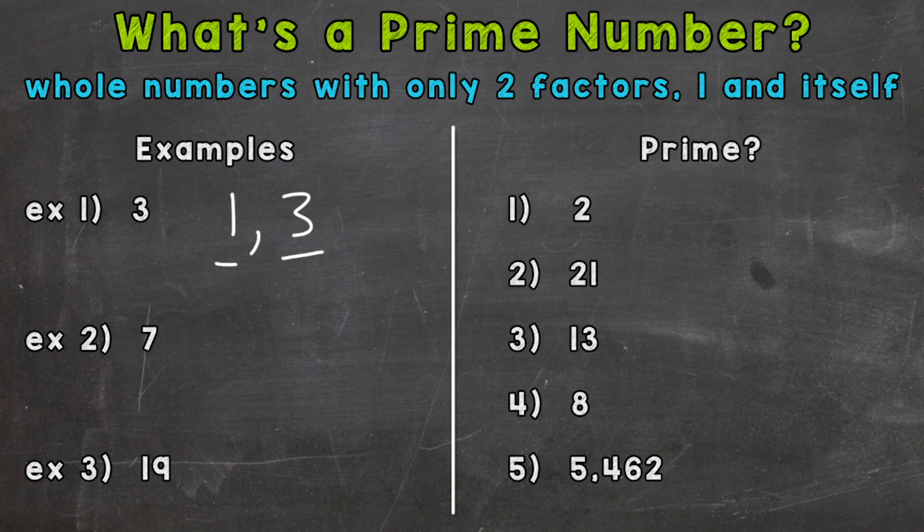This is the same case for example two and example three. Think of the factors of seven. What numbers can we multiply together to equal seven, or what numbers go into seven? Only one and seven, one and the number seven itself. One times seven or seven times one equals seven. Same for nineteen. Nineteen, the only factors are one and nineteen, one and the number itself.